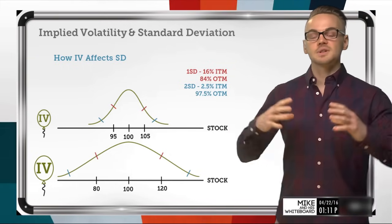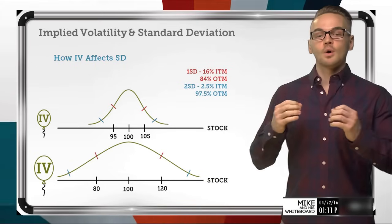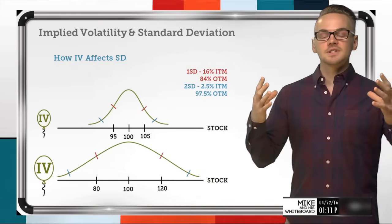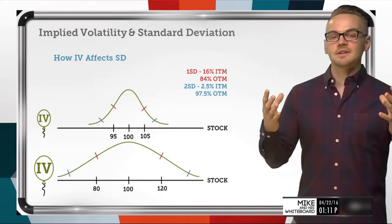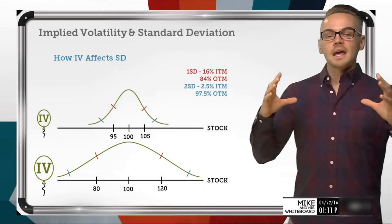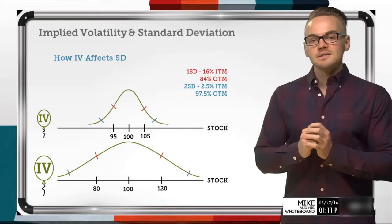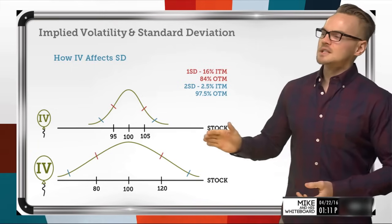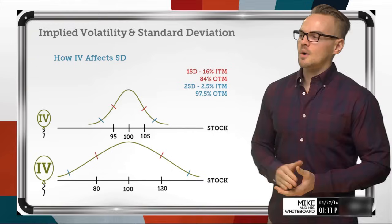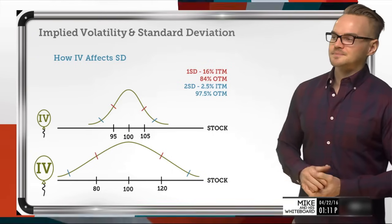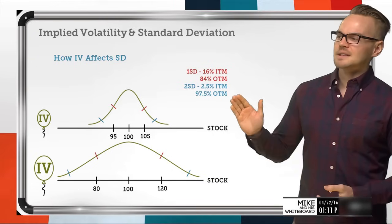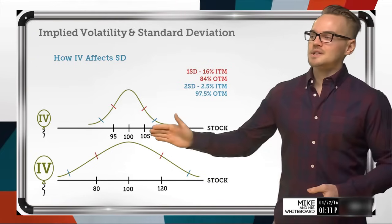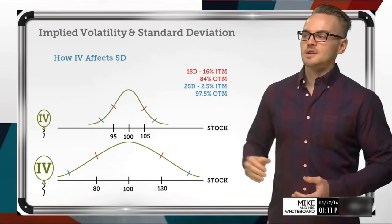When implied volatility is already expanded, it's usually going to be in a high IV environment, and when it contracts that usually brings it to a lower IV environment. Let's first talk about the low IV environment — I've got these values here and I want you to envision a stock price trading at $100.